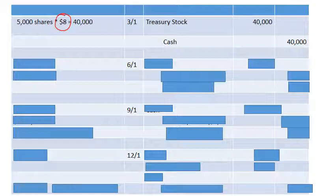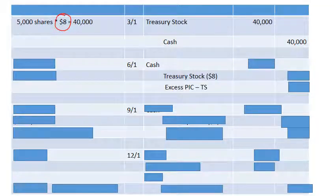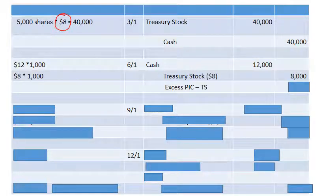On June 1st, we're selling 1,000 shares at $12 a share. We receive cash and decrease the treasury stock account — when we bought it, it was debited, so when we sell it, it's credited at $8. We're getting $12, so we're getting more than we paid. The difference goes to excess paid-in capital — treasury stock. Cash is $12,000, treasury stock credit is $8,000, and excess paid-in capital is $4,000.